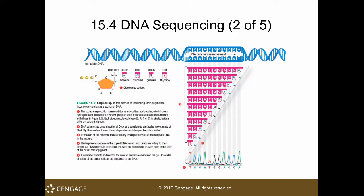The fragments of different sizes are then run in an electrophoresis. Electrophoresis is basically a technique like chromatography — you put your sample in a lane, and the samples are attracted by an electrical field. Because DNA is negatively charged due to the phosphate group, it will migrate toward the positive end.